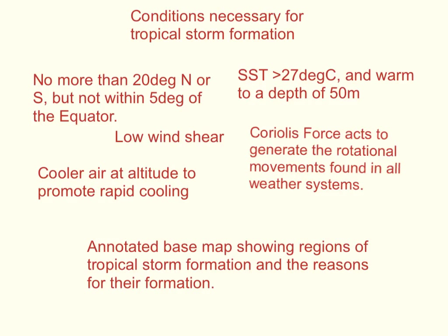First of all, we need to think about the conditions necessary for tropical storm formation. Essentially, a tropical storm won't form unless the SST — the sea surface temperature — is greater than 27 degrees centigrade, and there is considerable warmth to a depth of about 50 metres. That's so that the colder water at depth doesn't come up and interfere with the warmer water at the surface and prevent the storm developing.